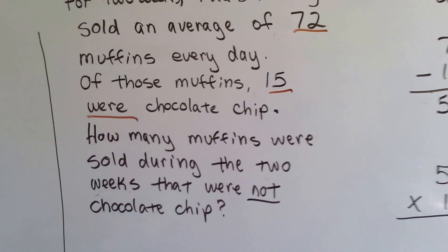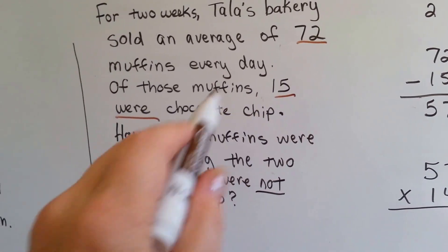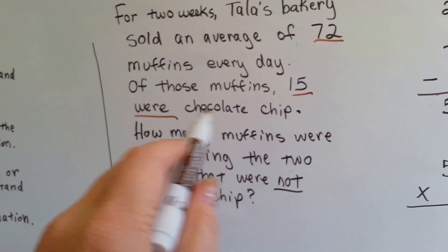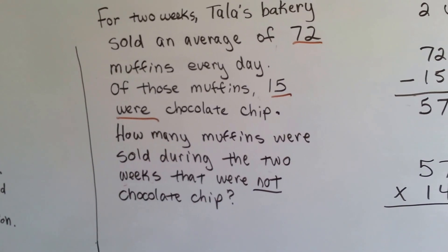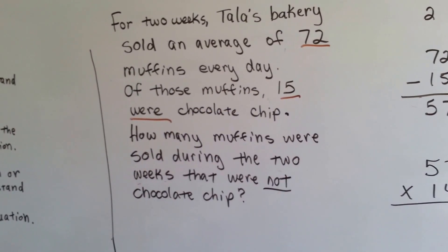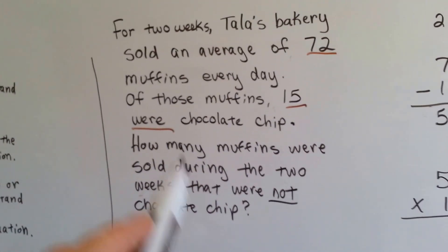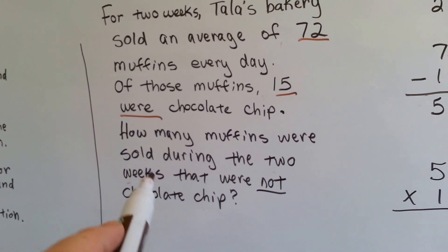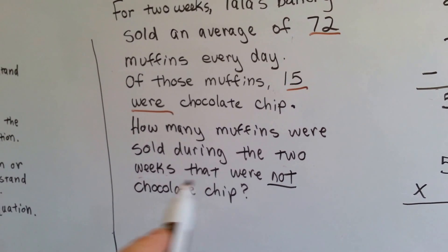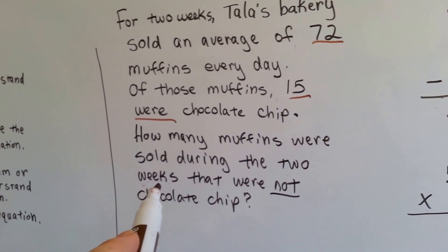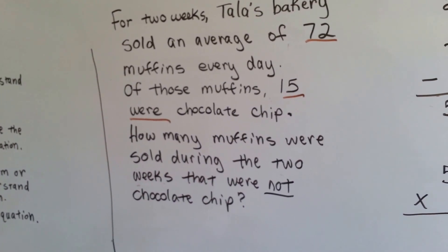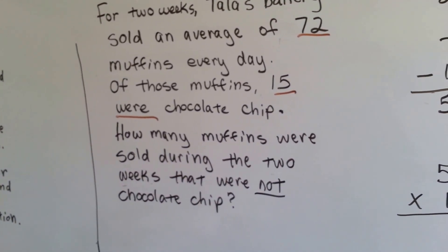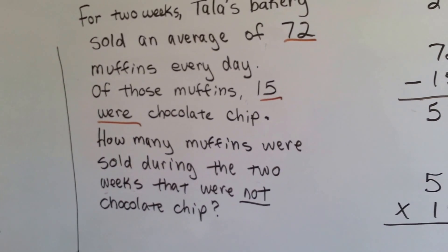So we need to figure out how we can take these chocolate chip ones out of the total. So we should probably subtract the 15 from the 72, right? The other thing we need to realize is we need to know how many muffins were sold during the two weeks. And this is an every day number. So how many days are in a week and how many days are in two weeks? We have to figure that out too.